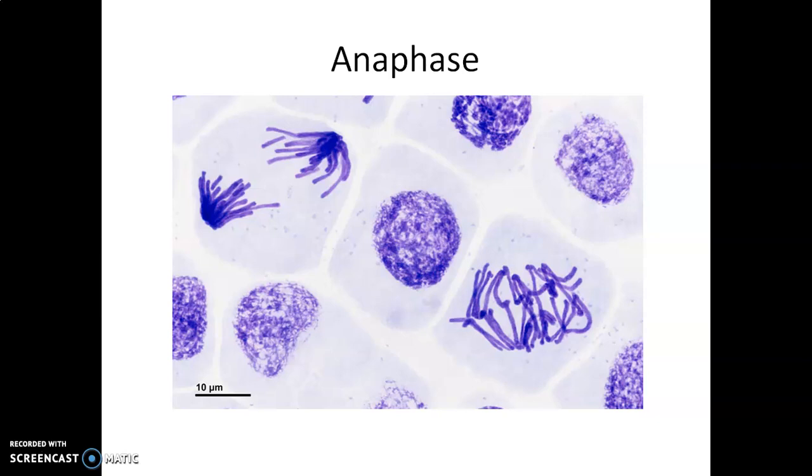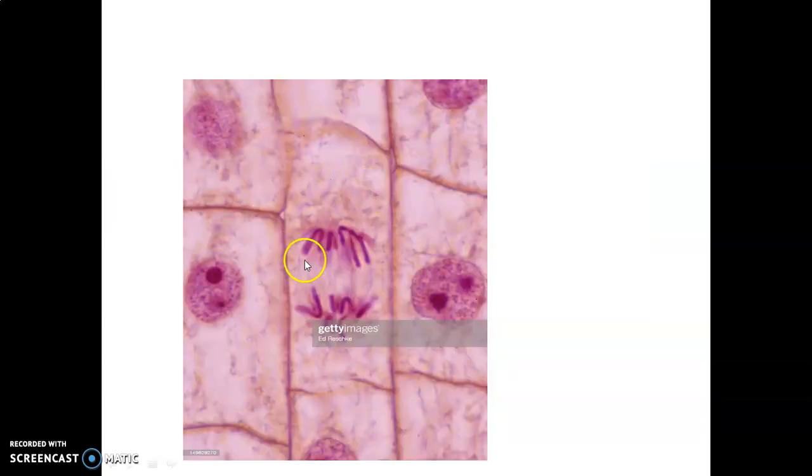The centromere splits simultaneously and the two daughter chromatids, referred to as daughter chromosomes of the future daughter nuclei, begin their migration towards two opposite poles. See, chromosome bundle at one pole and another chromosome bundle at another pole. As each chromosome moves away from the equatorial plate, the centromere of each chromosome remains directed towards the pole and hence at the leading edge with the arms of the chromosome trailing behind.